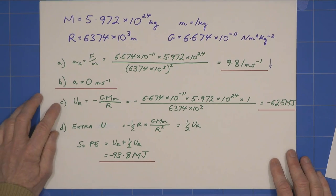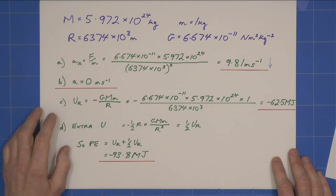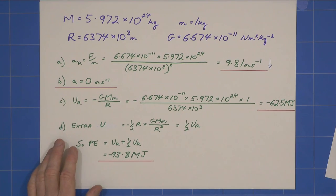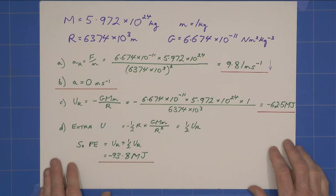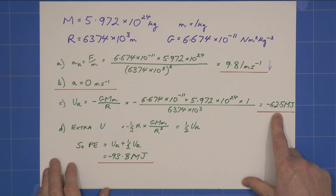Now, the slightly tricky bits, C and D, the potential energy, where we're using this formula, again, I plug the numbers in, and I get that value there, and it's minus, remember? Minus.